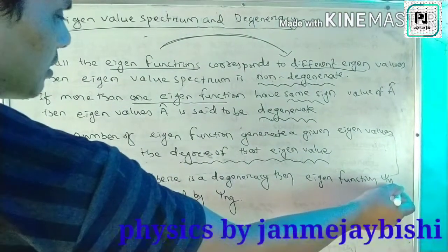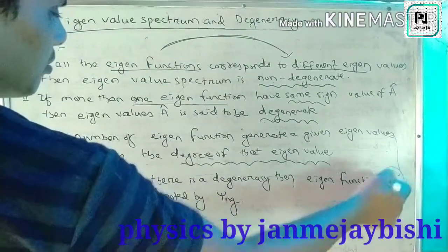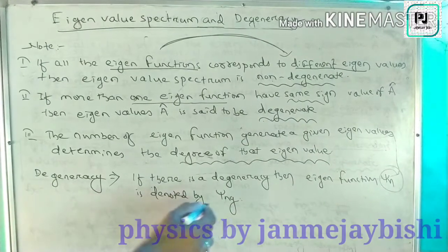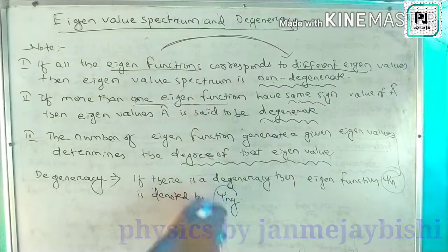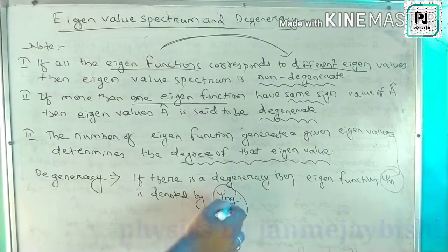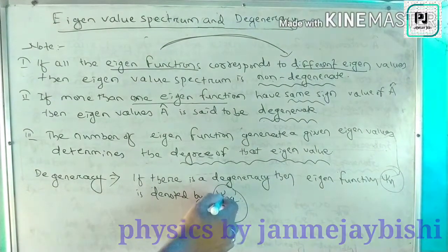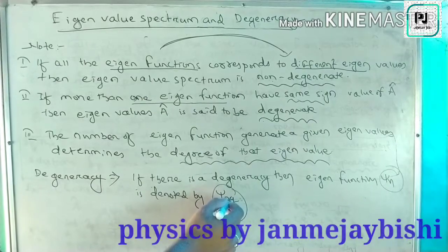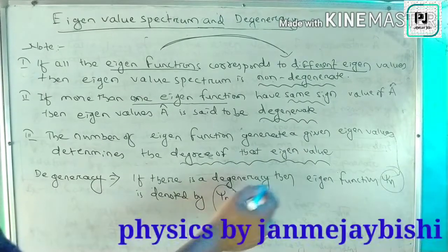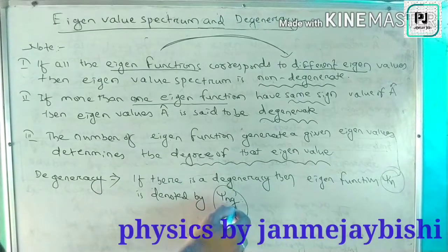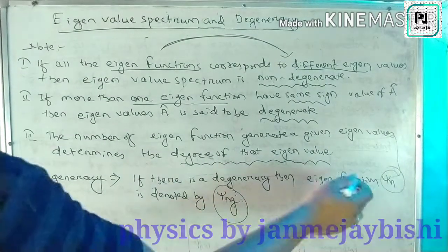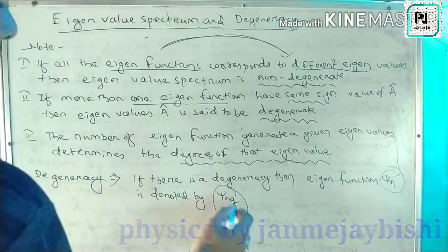Degeneracy means if there is degeneracy in the eigenfunctions. Suppose you have taken the eigenfunction ψₙ — the degeneracy is denoted by g, written as ψₙᵍ. This g represents the degree of degeneracy of the eigenfunctions.